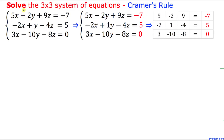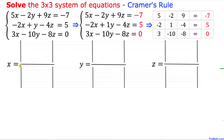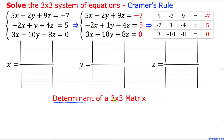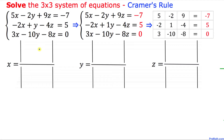Since we want to solve this system of equations, we are looking for x, y, and z values. We can set up x, y, and z variables in terms of boxes on the top and bottom — these boxes are called the determinants of a 3 by 3 matrix. In the next step we have to start filling out these determinants.